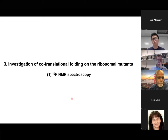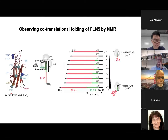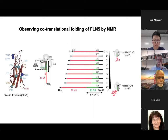Now we wanted to understand what happens to the nascent chain in terms of its folding on these modified ribosomes. We initially used solution NMR spectroscopy, particularly fluorine NMR. Our model protein is called FLN5, the fifth domain of the tandem repeat protein filamin, with an immunoglobulin-like fold. We put this on the ribosome with a linking sequence and a SecM stalling sequence, which stalls the nascent chain on the ribosome so it doesn't get released. We varied the linker length from 17 to 67 amino acid residues to obtain translational snapshots by making these ribosome-nascent chain complexes.